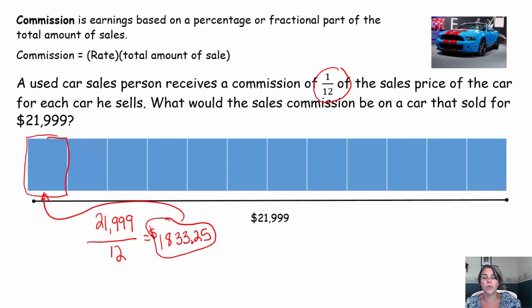So one-twelfth of $21,999 is $1,833.25. That's what that car salesperson will make for selling that car. You could also just use commission equals your rate times your total amount of sale, your original for what the car originally cost. So our rate is one-twelfth times that original cost of the car, $21,999.